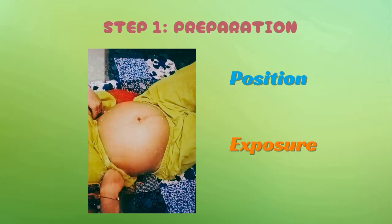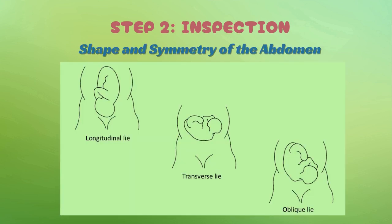First, let's get ready. Ask the patient to empty her bladder, sanitize your hands properly and rub them together to warm them before touching the patient. Ask the patient to lie down in a dorsal position — flat on her back with her thighs and knees slightly flexed. This position helps to relax the abdomen. Expose the abdomen from the xiphisternumto the symphysis pubis, but ensure the rest of the body remains covered for privacy. Stand on the right side of the patient.